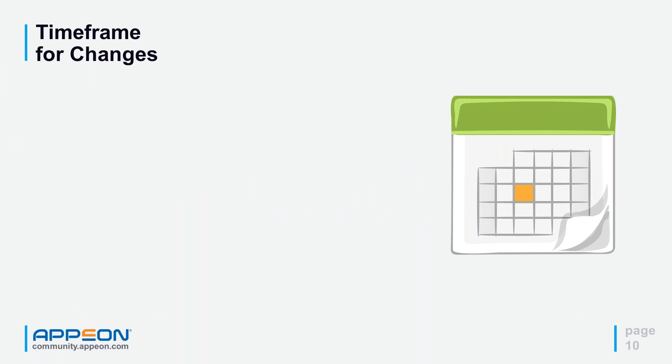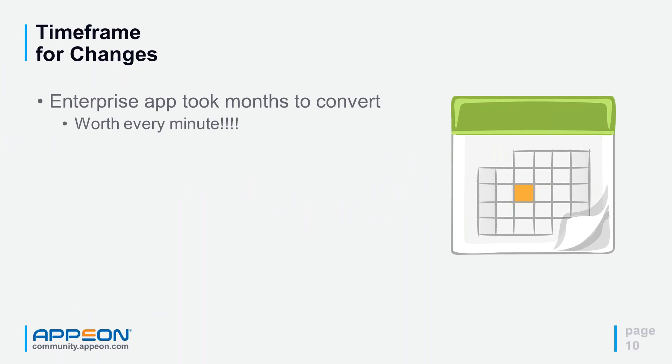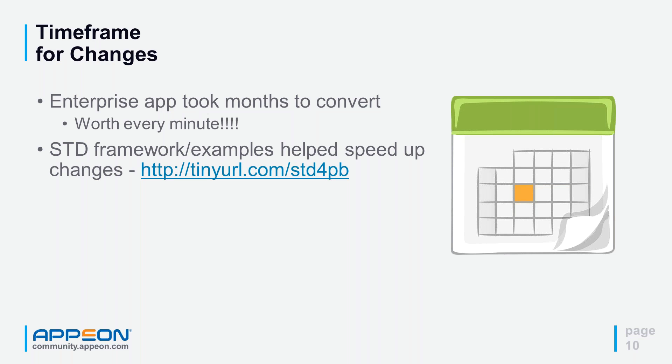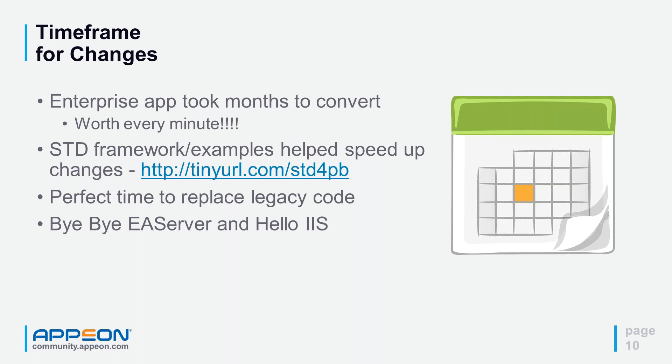The next phase was converting the code set, and yes, it took months — but it was worth every minute. We had help from Chris Pollock's examples, which really slingshot us forward when we hit brick walls. It was also the perfect time to replace legacy code. Since we'd been on Power Builder 2.0 at the beginning, there was legacy code that needed to be ripped out. We also removed EA Server and switched to IIS.